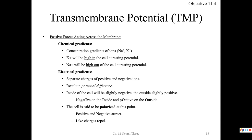We can create a chemical gradient, and with it create an electrical gradient. A chemical gradient — a concentration gradient — is mostly going to be sodium and potassium. Those are our two most important ions. We'll make sure we understand that potassium will be high inside the cell, and sodium will be high outside the cell.